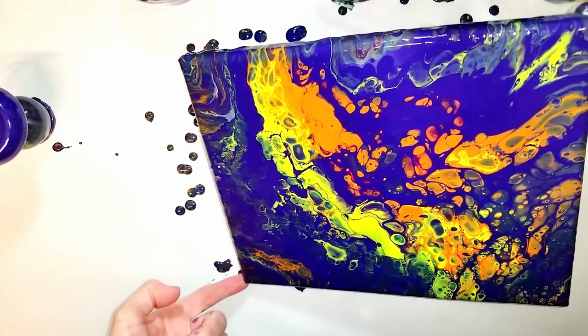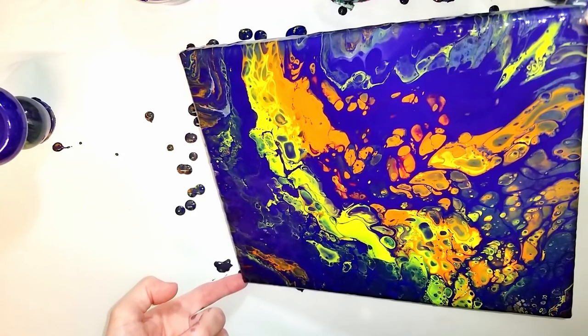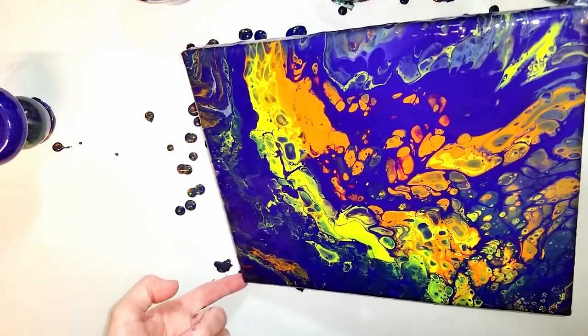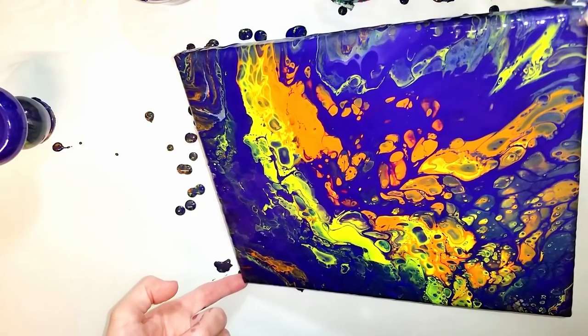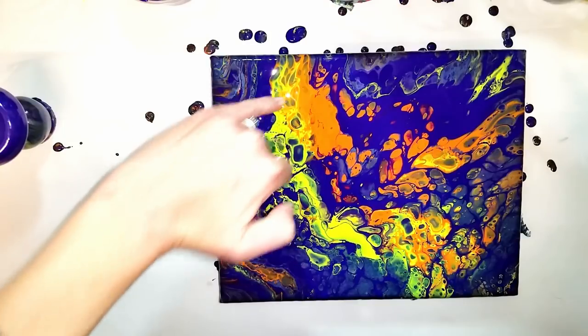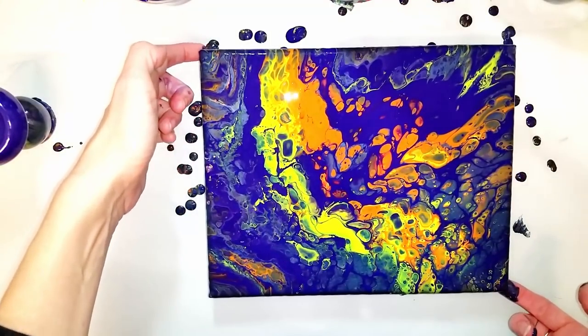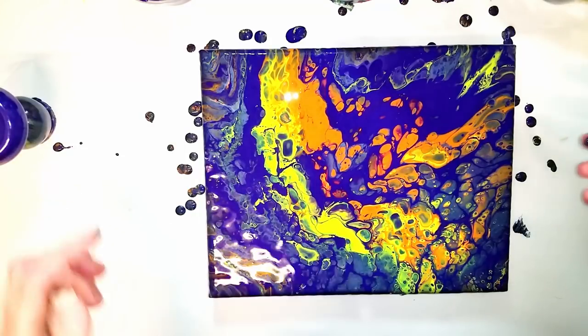Without it going weird. There we go. There we go. I like that better. Oh and that's really pretty right there. So there we go. Used up some paint. Some really pretty bright yellow against that purple.